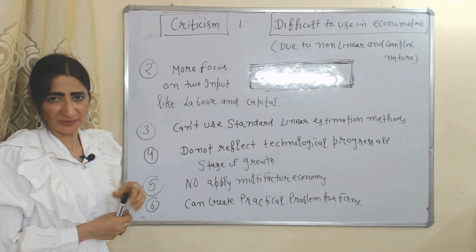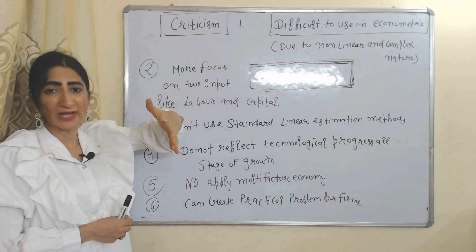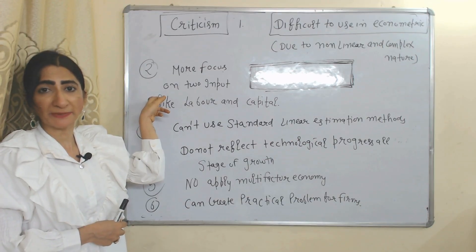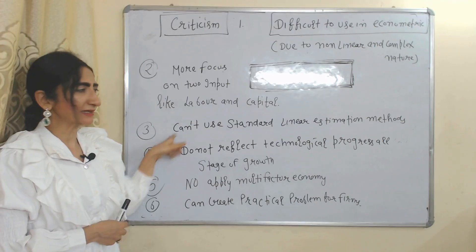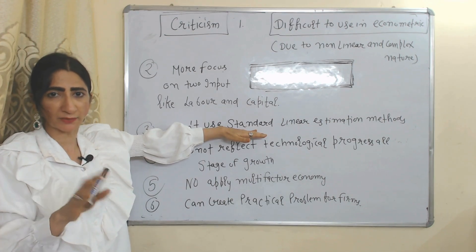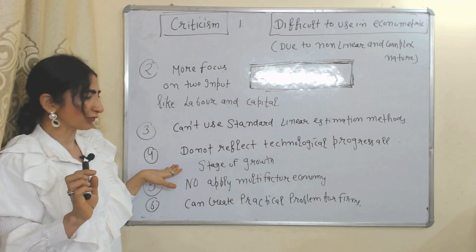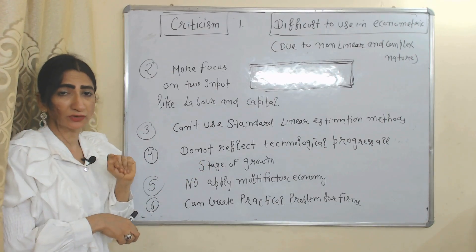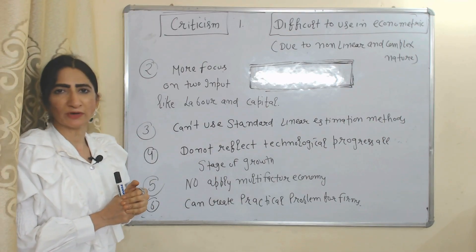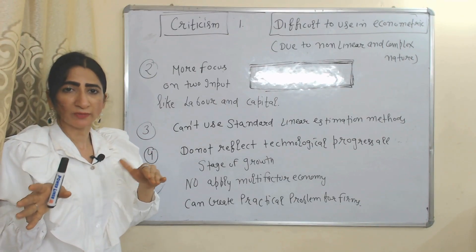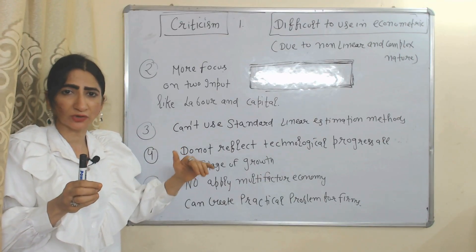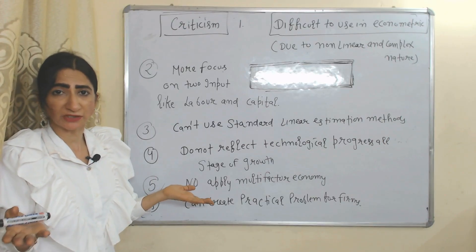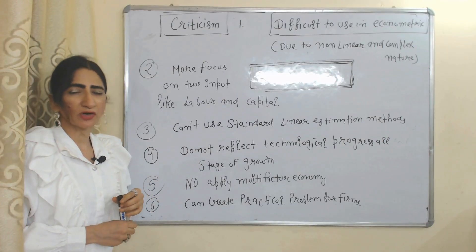Criticisms of CES production function: It is difficult to use in econometrics due to its nonlinear and complex nature. It focuses mainly on two inputs — labor and capital — ignoring others. Standard linear estimation methods cannot be applied. It does not reflect technological progress at all stages of growth, and is not applicable to multi-factor economies. Additionally, variation in elasticity of substitution between zero and infinity can create practical problems for firms, but CES does not address this.